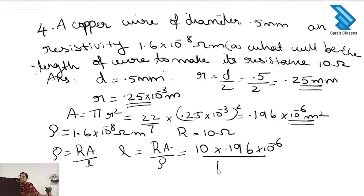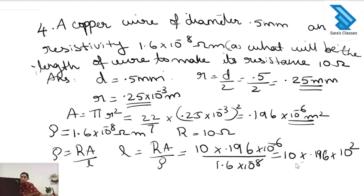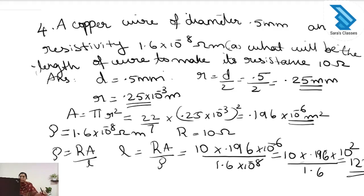The resistivity is 1.6 × 10⁻⁸ ohm meter. On calculating, the 10⁻⁸ in the denominator becomes 10⁺² in the numerator, and the answer is 122.7 meter.